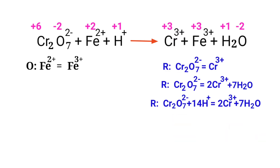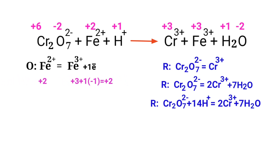For a redox reaction, the addition of charges must be equal on both sides. In the oxidation half reaction, both sides are not equal. To equalize them, add electrons — you cannot add protons. Adding one electron to the right side makes both sides equal to +2. The charges are now balanced in the oxidation half reaction.